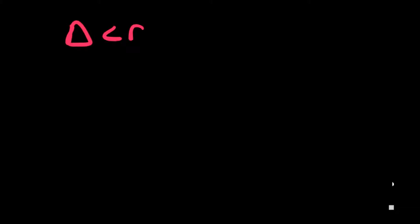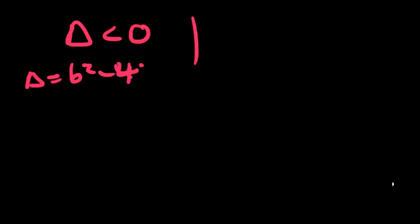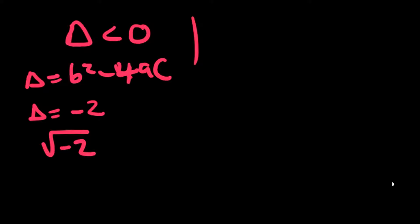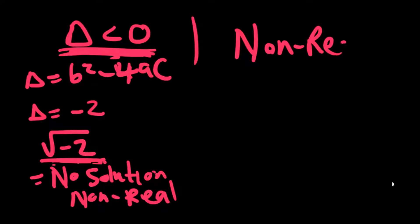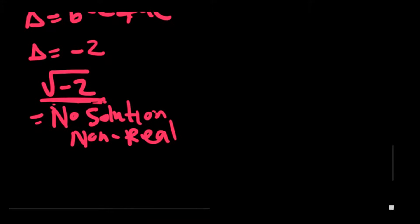Lastly, if the discriminant is less than zero — meaning you substitute into b squared minus 4ac and get a negative answer, like negative two — then inside your square root you have a negative number, which means there's no real solution. Your calculator will give an error. In this case, the nature of the roots is non-real.